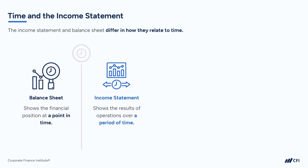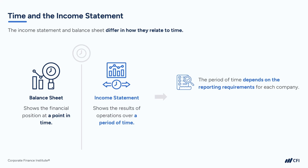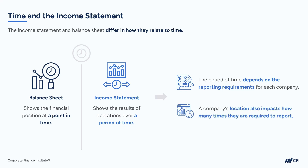The period of time reported really depends on the reporting requirements or needs of the company. For example, publicly traded companies in North America typically report both quarterly and annually. However, in countries like the UK, Germany, and Australia, publicly traded companies report to shareholders twice a year — semi-annually and annually.